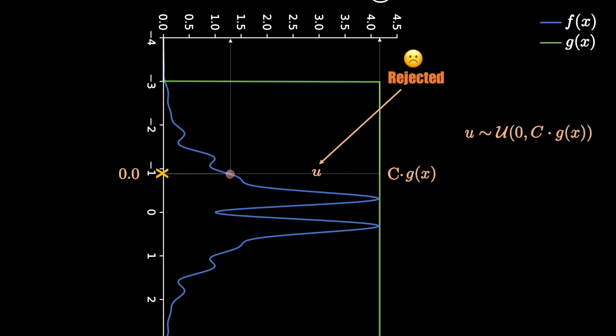By the way, our proposal distribution is also a uniform distribution, but it is just one example of proposal distribution.